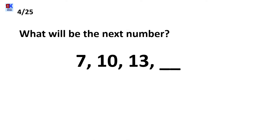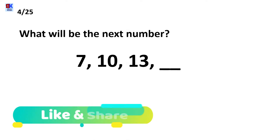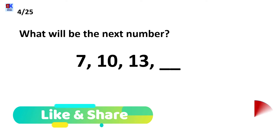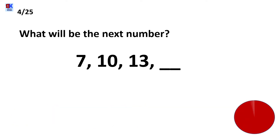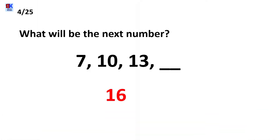Fourth question is: what will be the next number — 7, 10, 13? Here we have used the concept of skip counting. The first number is 7; after we skip count by 3, the next is 10, and the next is 13. Skip counting by 3 after 13, the answer is 16.